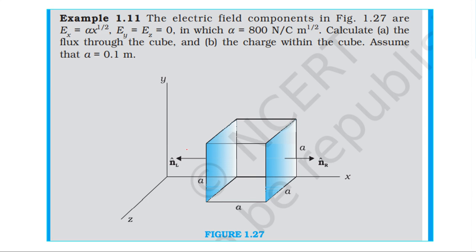To find the flux through the cube, consider the left face first. The electric field on the left face and the outward area vector are in opposite directions, making the angle between them 180 degrees. So the flux through the left surface uses theta equals 180 degrees, and cosine 180 degrees equals negative one.